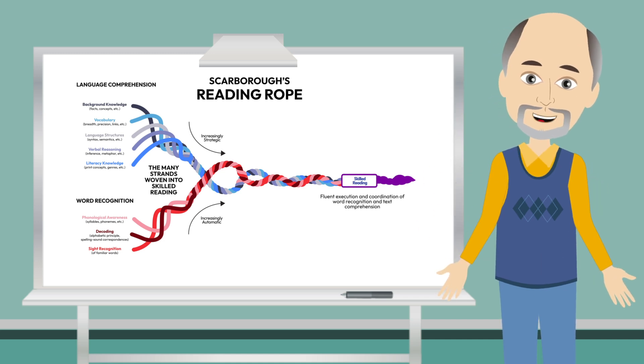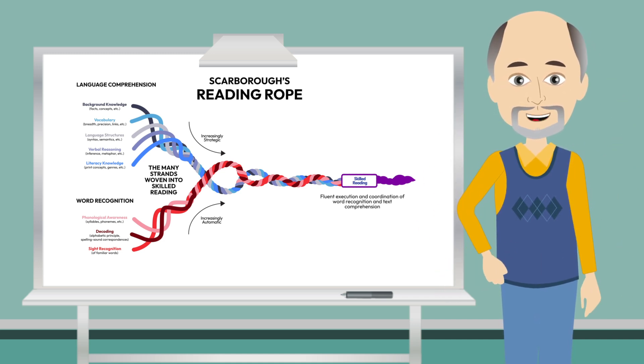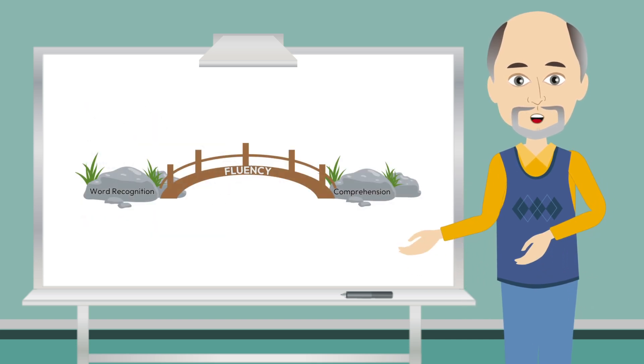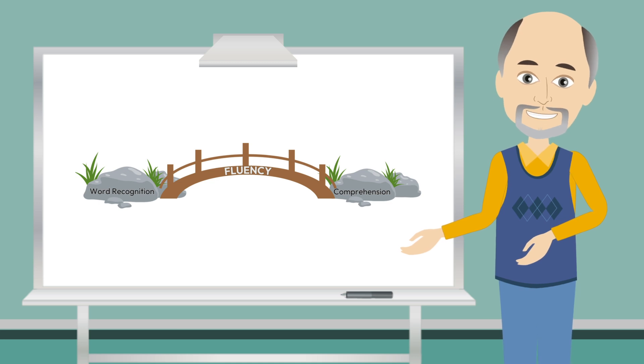Fluency is the bridge that connects these two domains. On one end, fluency connects with word recognition as this should occur with accuracy and automaticity. On the other end, prosodic language integrates with the language comprehension components that builds meaning.